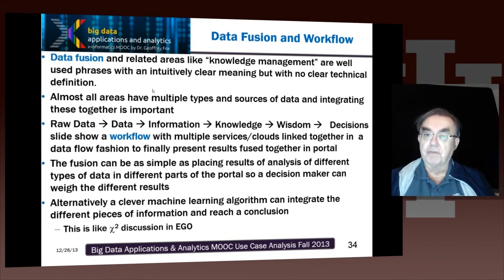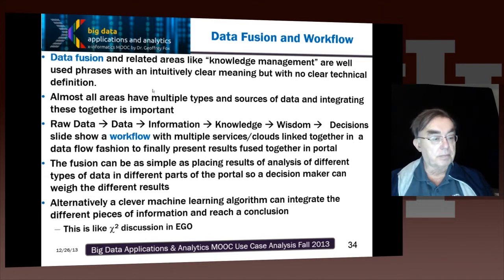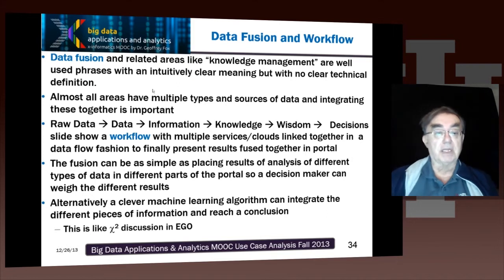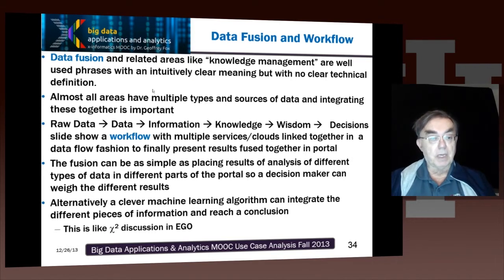There are many people who work in this field, and it's often rather hard to find out exactly what they do. But the decision slide shows the essential idea: you have a workflow. Workflow is very important and is present in nearly all of these different use cases. You have multiple services and clouds linked together, typically with data — using data in a generic fashion meaning data, information, or knowledge — flowing from one service to another, getting refined, transformed, and filtered as it goes, ending up with a better or alternative understanding. The simplest type of fusion is to take six sources of information about a subject and place them in six gadgets, but most fusion is a little more sophisticated than that.